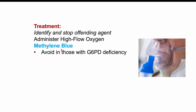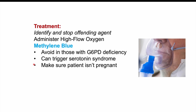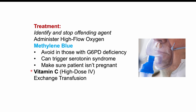There are a few caveats with methylene blue. You want to avoid it in those with glucose-6-phosphate dehydrogenase deficiency. Be careful in patients on SSRIs, as it can trigger serotonin syndrome by acting as a monoamine oxidase inhibitor. Also check that the patient is not pregnant, as methylene blue can be a teratogen and very harmful to a developing fetus. The alternative treatment is vitamin C, or ascorbic acid, at high dose in IV form, because vitamin C reduces Fe3+ back to Fe2+.